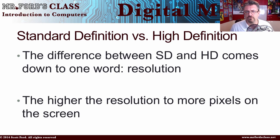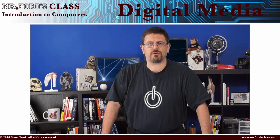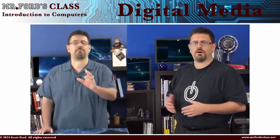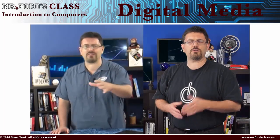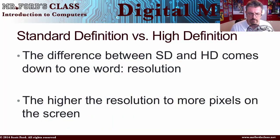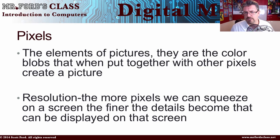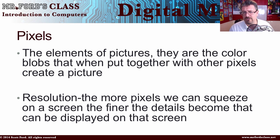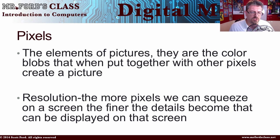Resolution is about how many pixels we can squeeze on a screen. I did a separate video just on SD and HD and I'll link it here — it gives a more involved explanation — but let's cover the basics. Pixels is a mashup of two words: picture and element. They are the color blobs that we put together with other pixels to create a picture. The more of these color blobs we can put on a screen, the clearer the image becomes.